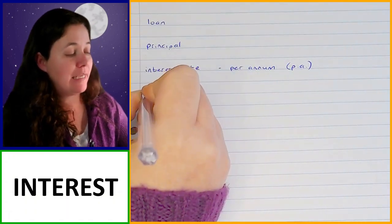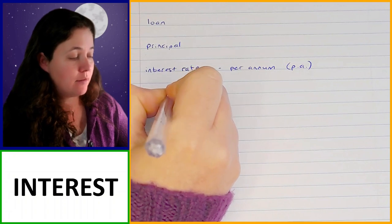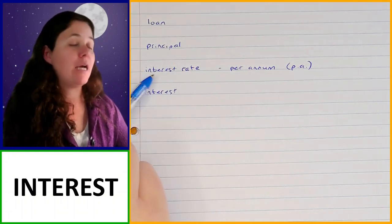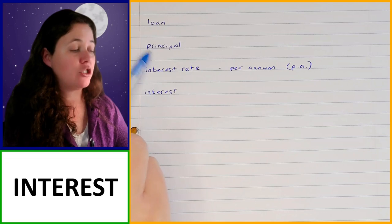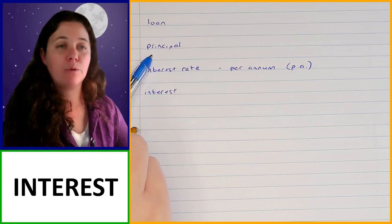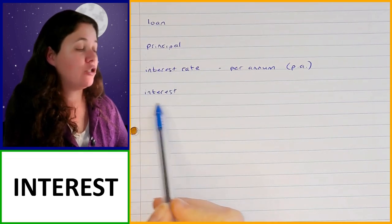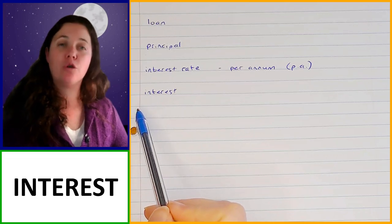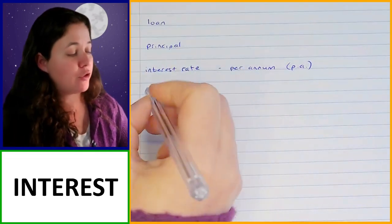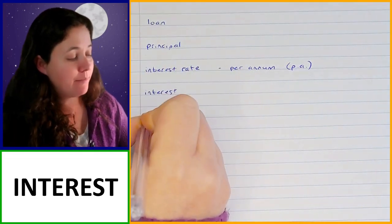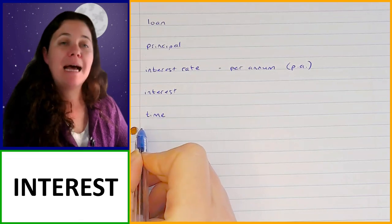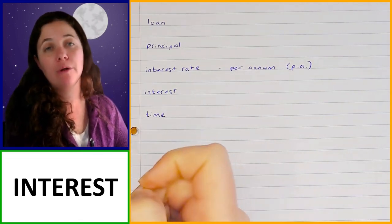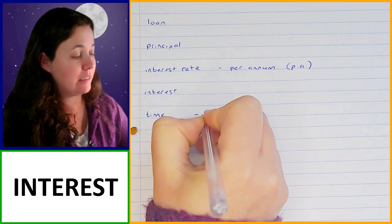Then we've got the interest, which is the result of taking that interest rate and working out that percentage of the principal amount per year, so that the interest is the actual amount of money that your investment or your loan will grow by. Then we've got time — this is how long you borrow or invest the money for, calculated in years.